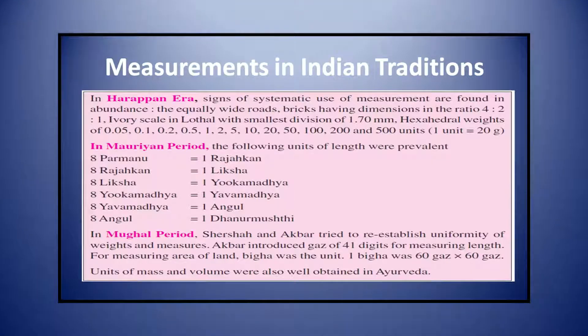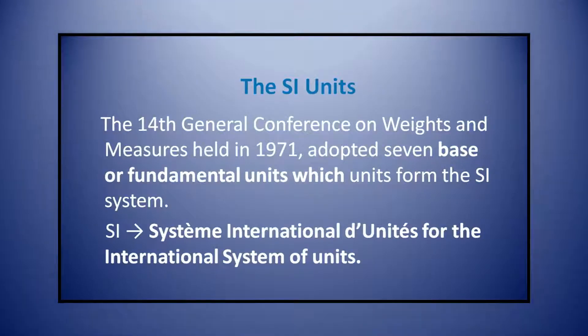In science, the results of an investigation are considered established only if they can be reproduced by investigations conducted elsewhere under identical conditions. Practices of systematic measurement are very old in India, as you can see from the table showing different units of measurement used in different periods of time in India. Now we will discuss SI units. The 14th General Conference on Weights and Measures, held in 1971, adopted seven base or fundamental units which form the SI system.